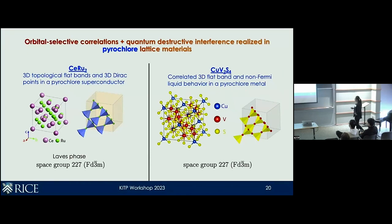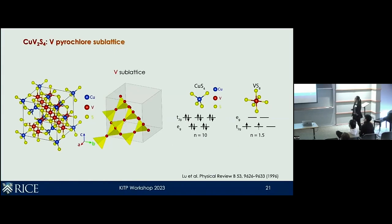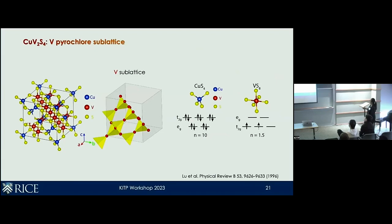Next I want to show an even more interesting system we've been studying recently, with more interesting physics regarding correlations. CuV₂S₄ — copper vanadium 2-sulfur 4 — has three atoms: copper, vanadium, and sulfur. It is the vanadium site that forms the pyrochlore sublattice. From electron counting and previous X-ray photoemission measurements, the copper sits in the middle of the tetrahedra, and from measurements you can see it is basically a fully filled shell. Therefore the bands near the Fermi level have very little copper content.